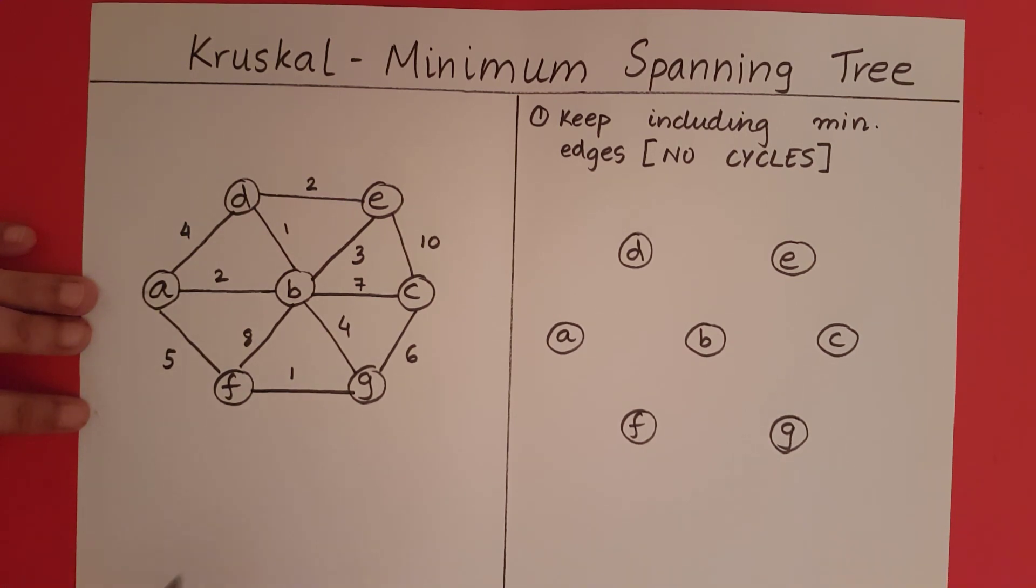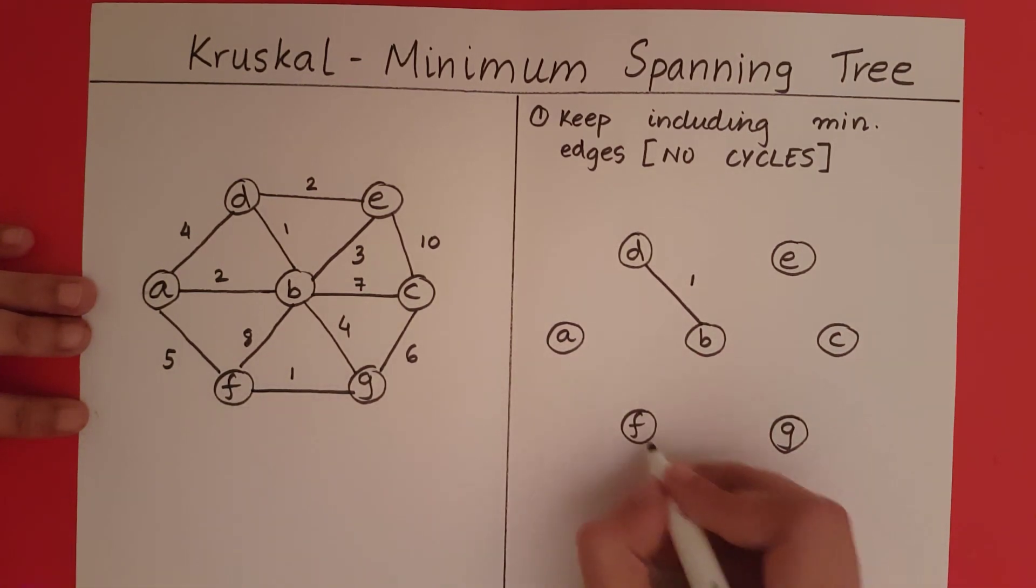What are the minimum edges in this set? We have a minimum edge 1 here and a minimum edge 1 here. So first let me include this. Now the minimum edge is this, so I will include that.